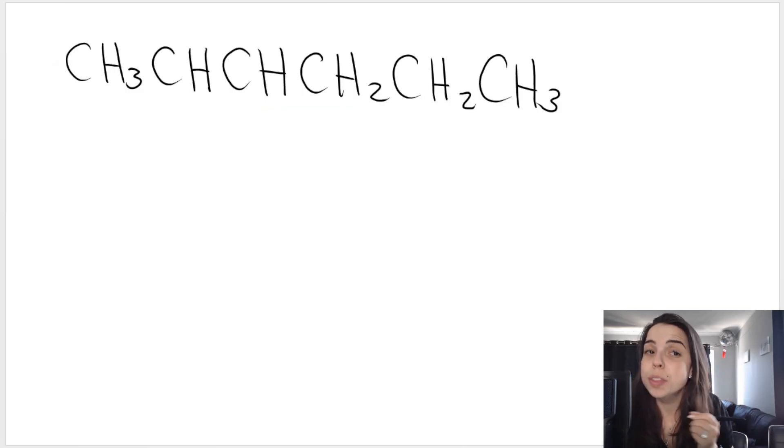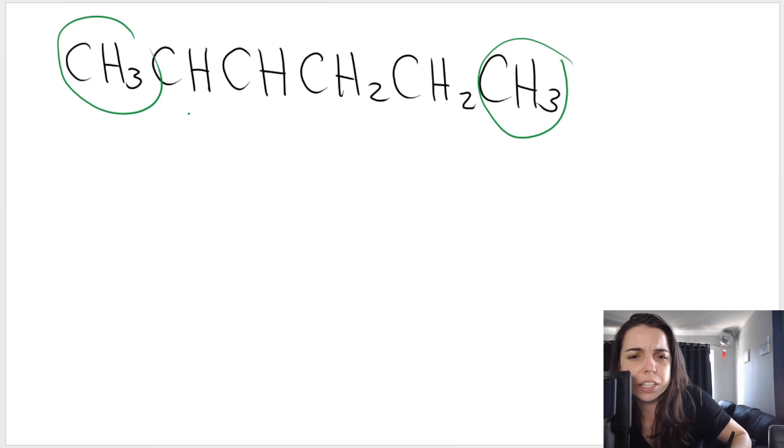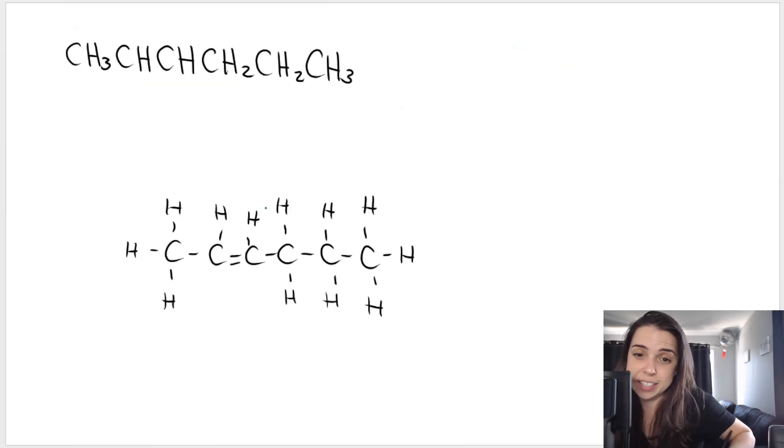If I were to give you this and ask you to name it, you should immediately see that it is not an alkane because can you see here CH3, CH3, but here I've got a CH and a CH, not a CH2. If you had to draw it out, you would actually see that it is an alkene with a double bond. So not an alkane.